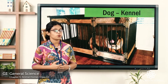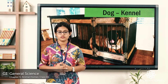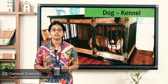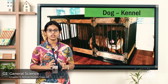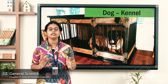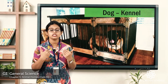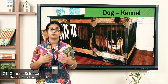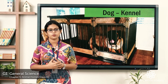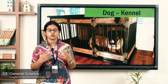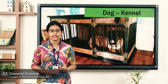Coming to the next one — dog. Where do dogs live? They live in the kennel. It is a small shed which is built in the shape of a house. This kennel provides the dog security and protection. So, dogs live in the kennel.